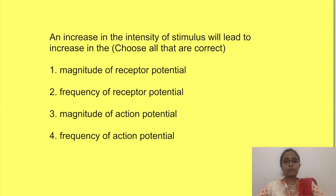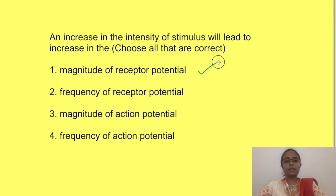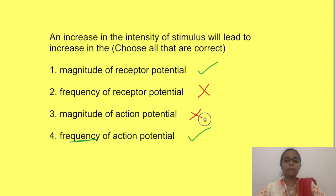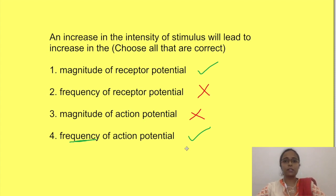Let's come back to our original question: an increase in the intensity of a stimulus will lead to an increase in which of the following? The first option is correct — the magnitude of receptor potential increases. As stimulus intensity increases, the magnitude of receptor potential increases, and not the frequency of receptor potential. In contrast, when the magnitude of receptor potential increases, the frequency of action potential increases, and not the magnitude. Remember, action potential is an all-or-none phenomenon, so its magnitude won't change if the baseline conditions are the same.